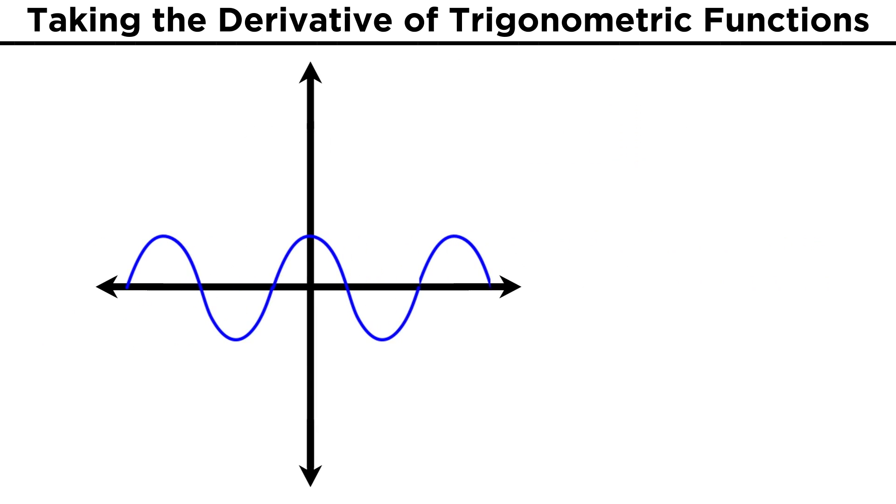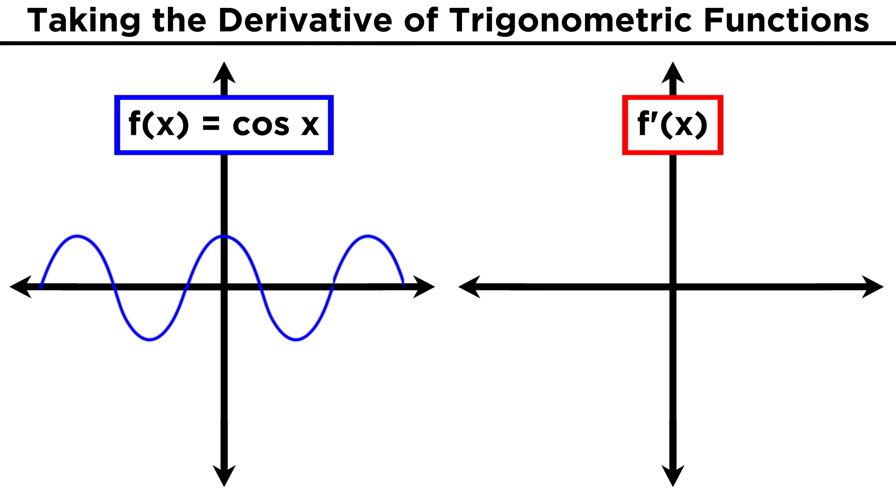What if we now try to take the derivative of cosine x? Well let's apply the same logic that we just used, finding where the derivative must equal zero, and the places where it must equal positive one and negative one. And we end up with this.